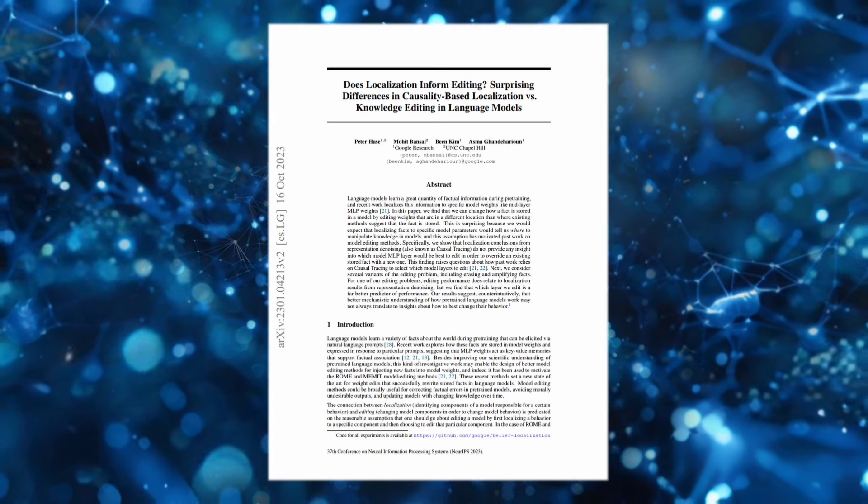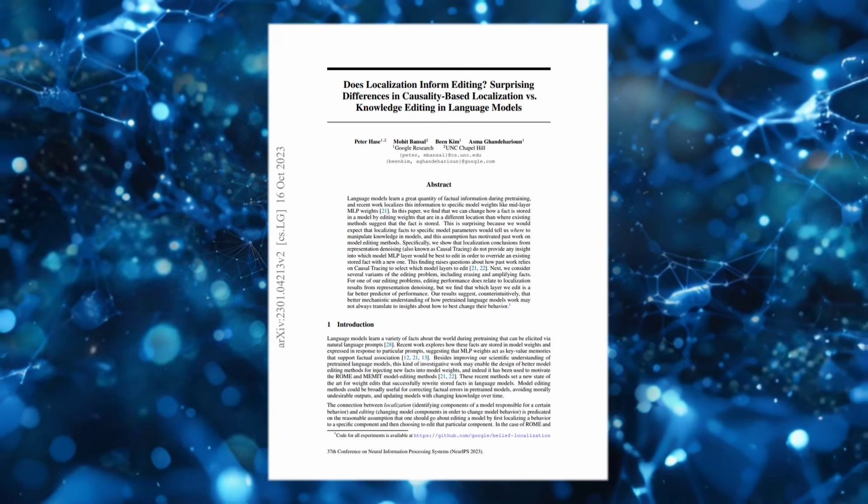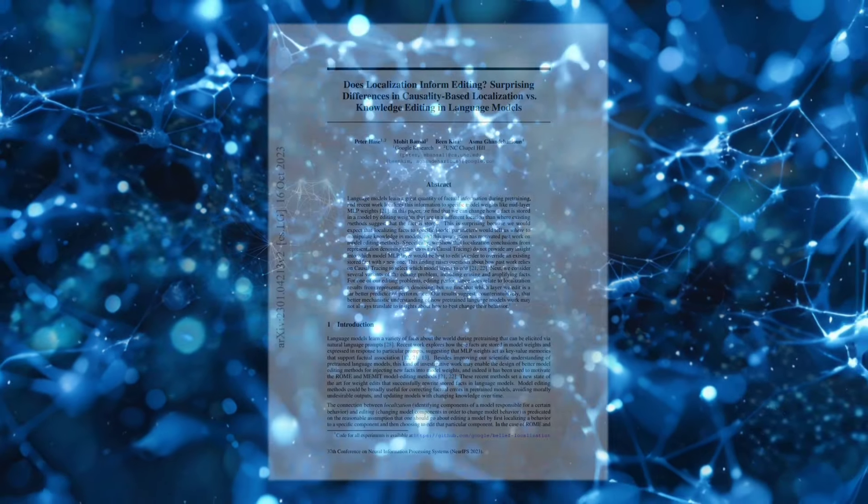The more granular you get, the bigger the search space becomes. When you're talking about a causal intervention on a layer versus a neuron, your model might only have 30 layers, but it's going to have maybe 30 times 1,000 or 30 times 4,000 or more neurons. So at that point, when you're thinking about searching through intervention space, particularly in any combinatorial way, things could get more complicated.